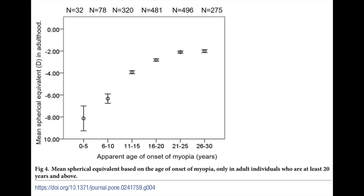Let's take a look at this second graph. This graph looks at what someone's prescription is as an adult compared to when they first started to become myopic. Basically, the earlier you first become myopic the higher degree of myopia you have as an adult. The take-home here is that kids less than 10 years old, and especially those that develop myopia under the age of five, are at a very high risk for becoming severely myopic. So if we're going to try to intervene and slow down the myopia, we want to make sure we start before the age of 10.